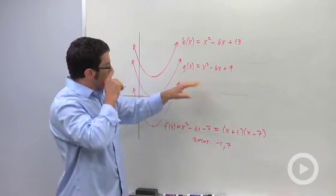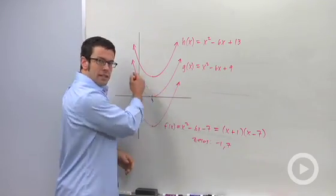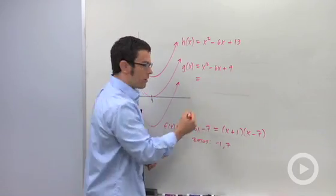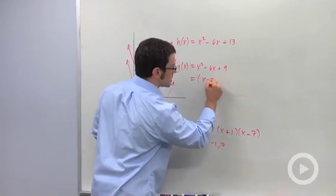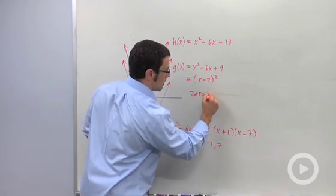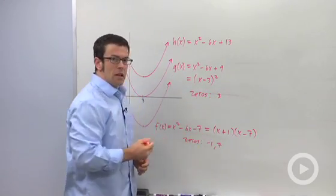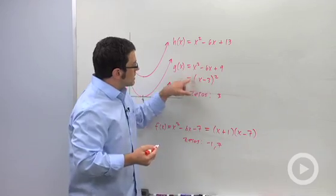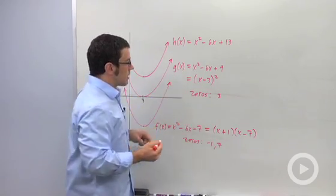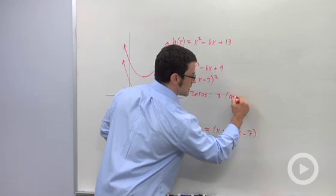Now let's look at this guy, the one that just sort of touches the x-axis and bounces off. This is a perfect square and it factors as x minus 3 squared. And so its zeros are just 3. Well, because x minus 3 is a factor twice, we say that 3 is a zero of multiplicity 2.